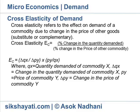Where QX is the quantity demanded of commodity X. ΔQX is the change in the quantity demanded of commodity X. PY is the price of commodity Y. ΔPY is the change in price of commodity Y.